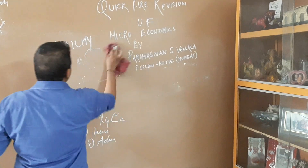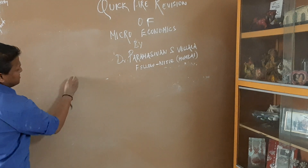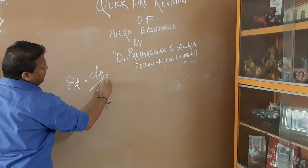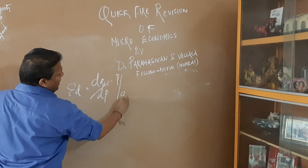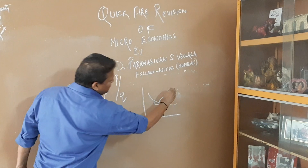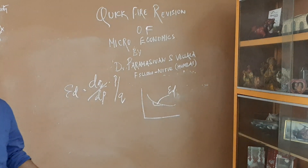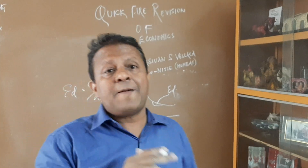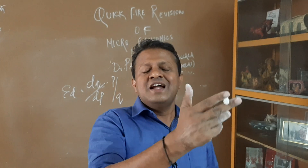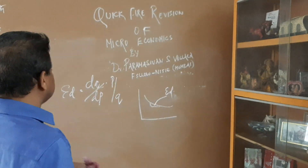Once done with demand, we study the elasticity of demand. Elasticity of demand is DQ upon DP multiplied by P upon Q — this is the slope of the demand curve. It can happen because of price — called price elasticity. If because of income, it is called income elasticity. If because of changes in the price of related goods, it is called cross elasticity. If because of advertising, it is called advertising elasticity.